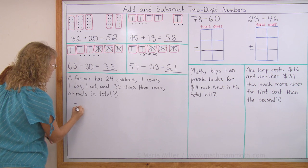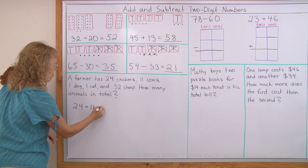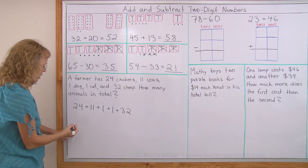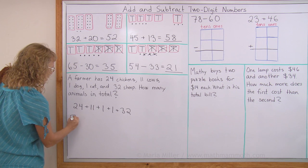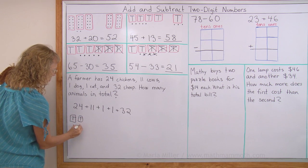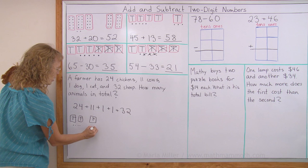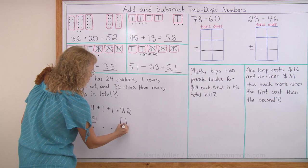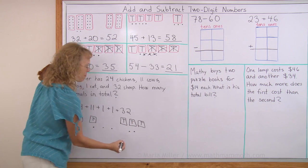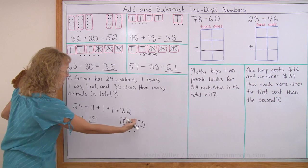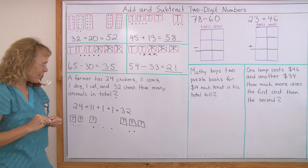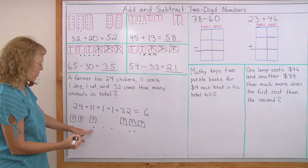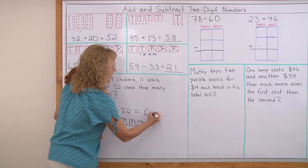Let me first write this addition. We need to add all those numbers. 24 plus 11 plus 1 plus 1 plus 32. So I'm going to draw a model for 24 here. 24 means two tens and four. 11 means one ten and one. This is just one. This is just one. 32 means three tens and two. And now you can just kind of see the answer, right? We can just check how many tens, how many ones. Six tens and then four, five, six, seven, eight, nine. Nine ones. 69 animals.